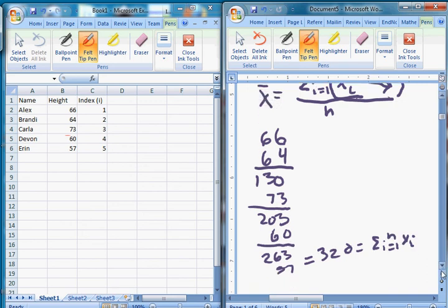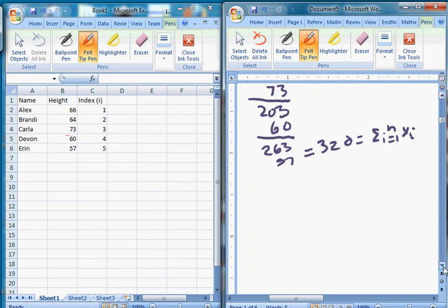Now if we want to find the average, well, scroll down a little bit further, we'll get X bar equals, it's going to be 320 divided by n. How many people are there? 1, 2, 3, 4, 5 people. So 320 divided by 5 should give us our average height. And sure enough, if you do that, you get 64.